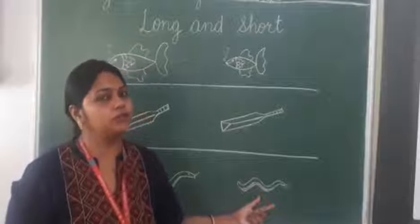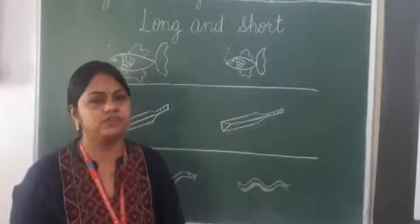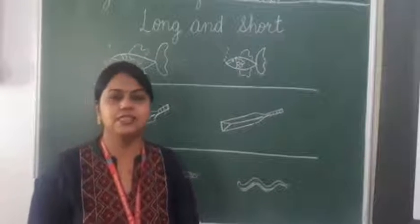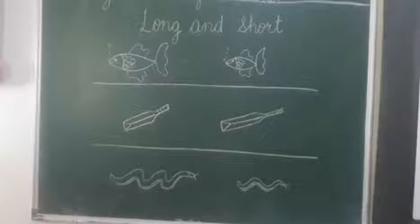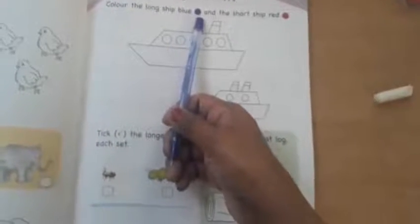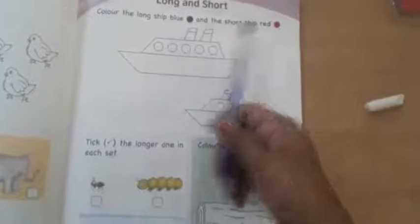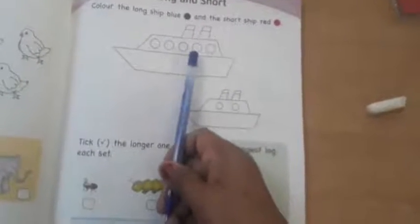Now I am going to show you one picture of your EBS book that you have to complete. This is page number 3 of your EBS book — Long and Short. Color the long ship blue and the short ship red. So you have to do the comparison, and in the long one you have to do blue color, and in the short ship you have to do red color.